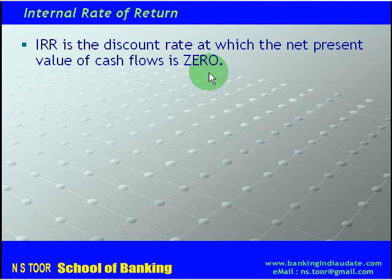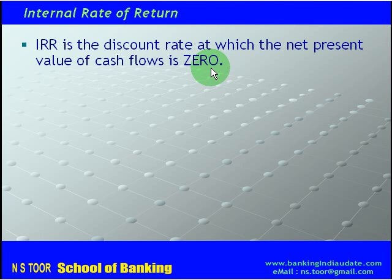Net present value of cash flows is zero. So, NPV should neither be positive nor negative — it should be zero. At a particular discount rate when the net present value is zero, that discount rate is called the internal rate of return.